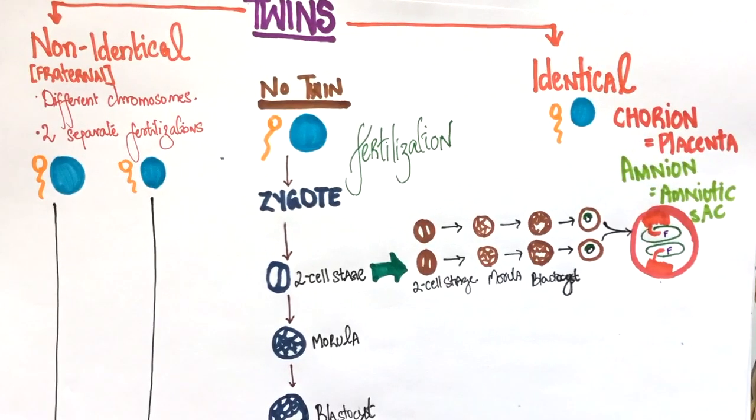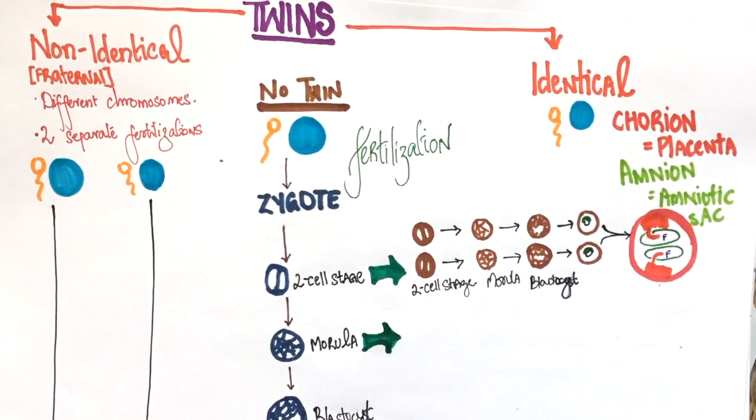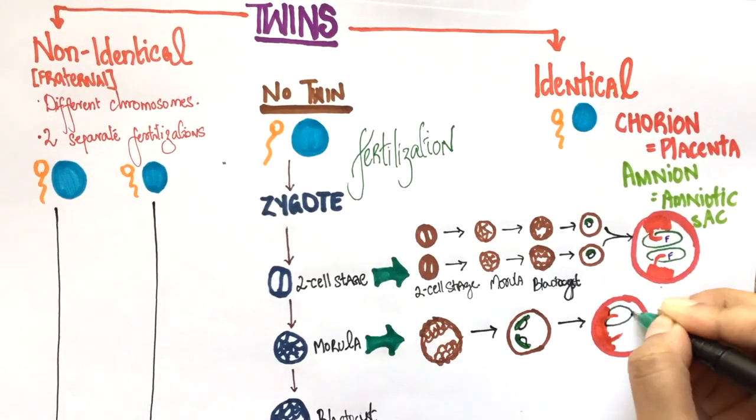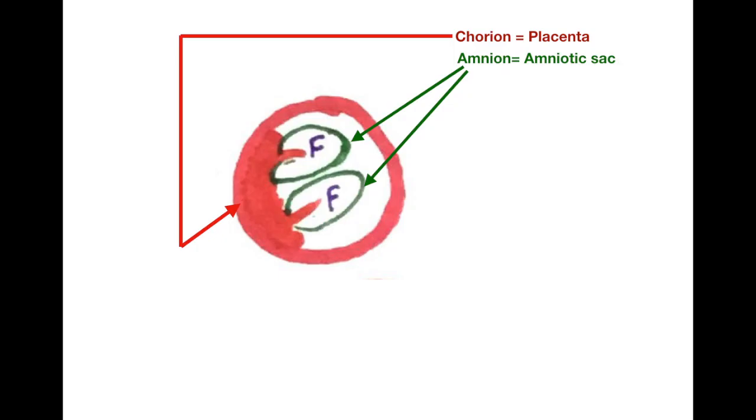Now if cleavage takes place at the morula stage, the twins will share one placenta but will still get to have their own amniotic sac. This makes it monochorionic diamniotic.